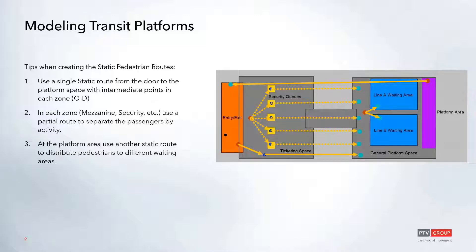Next is modeling static routes. The first tip is to use a static route from the door to the platform edges with intermediate points in each zone. This makes it easier when dealing with things like security queues, and it enables the use of partial routes, which require intermediate points. Depending on your data, you might need to do zone-to-zone static routing, which is also fine.